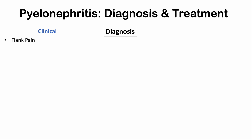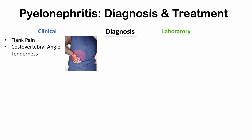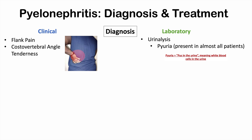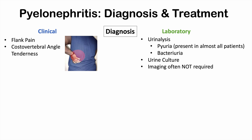Diagnosis of acute pyelonephritis can often occur by clinical examination. Flank pain, costovertebral angle tenderness, and fever and chills are highly suggestive. Laboratory investigations are also important, including urinalysis. Pyuria — pus in the urine — is present in almost all patients. Bacteria in the urine is another key finding, and urine culture can identify the bacterial species. Imaging is often not required for diagnosis.